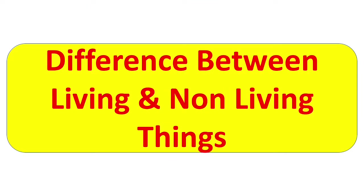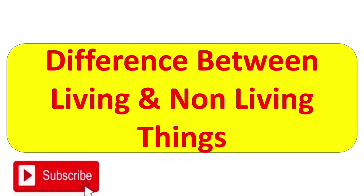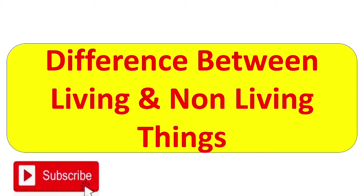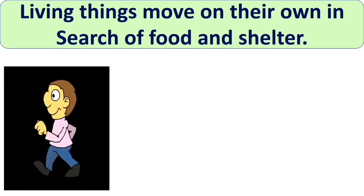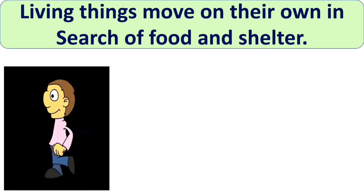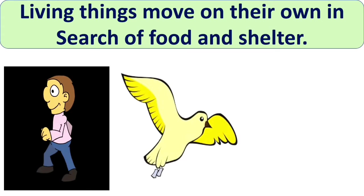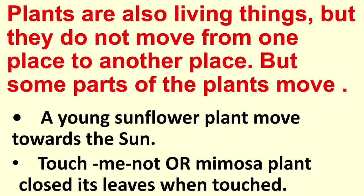How can you identify whether a thing is a living thing or a non-living thing? Living things differ from non-living things in many ways. The first one is: all living things move on their own in search of food and shelter. Human beings move on their legs, birds fly with the help of their wings, and animals move with the help of their legs.